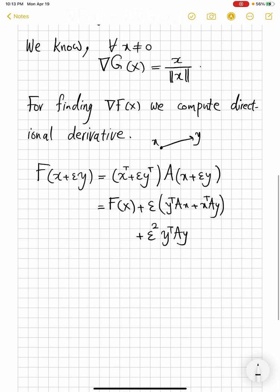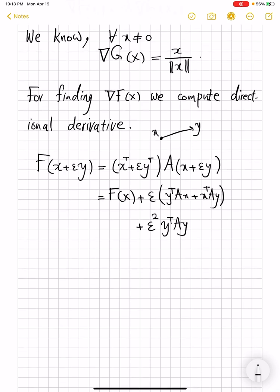So if you subtract F(x) from both sides, divide by epsilon, and let epsilon go to 0, it then shows that the directional derivative of F at x in direction y equals y^T Ax plus x^T Ay. But because A is symmetric, these two terms, if you transpose one of them, you get the other one. So we can write this as twice y^T Ax.